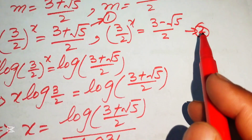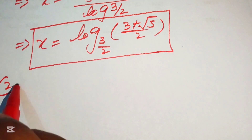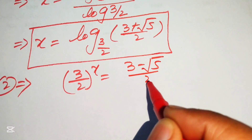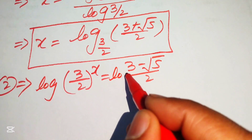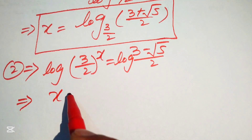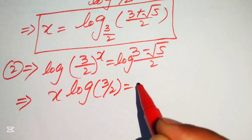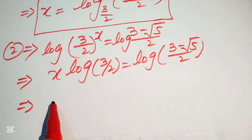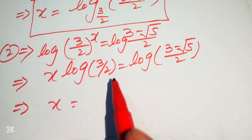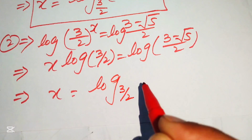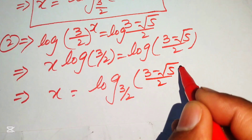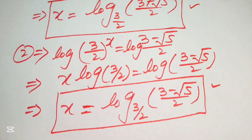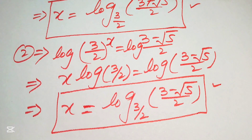For the second case, (3/2)^x = (3 - √5)/2. Taking logs and applying the same logarithm property, we get x = log base (3/2) of ((3 - √5)/2). These are the two final solutions of the equation. Thank you for watching — please subscribe for more videos.